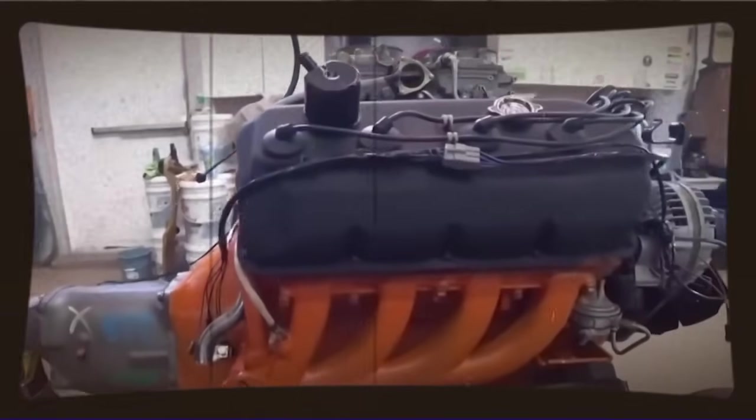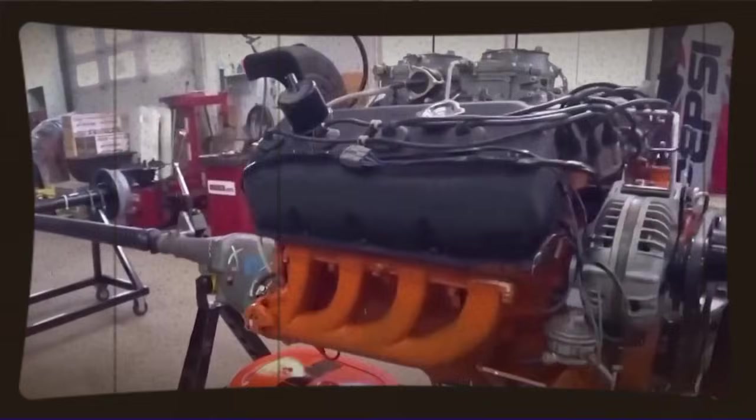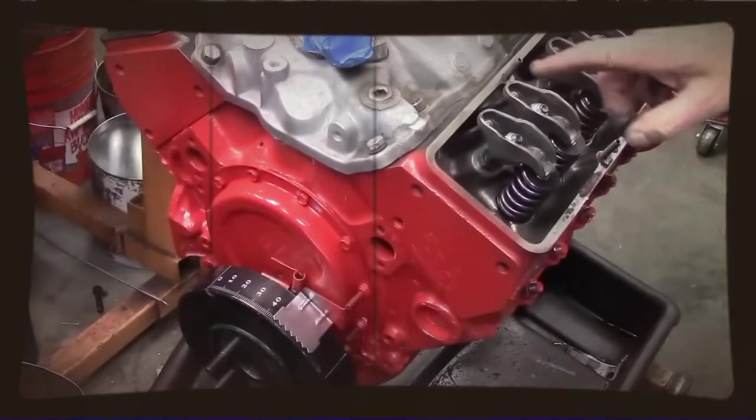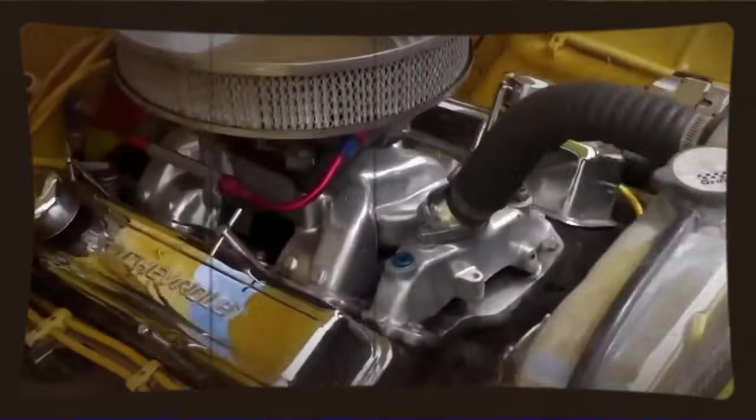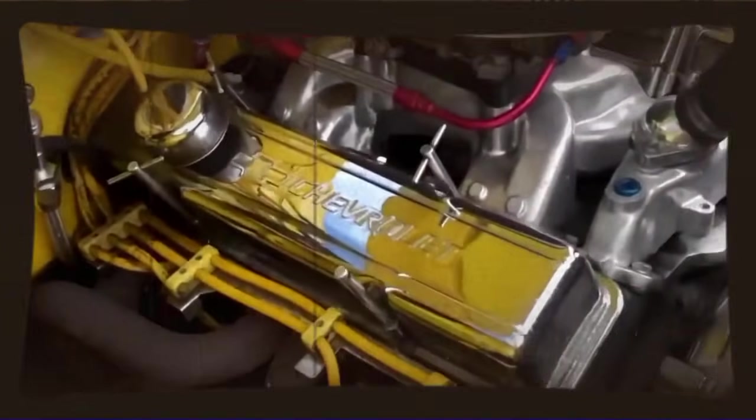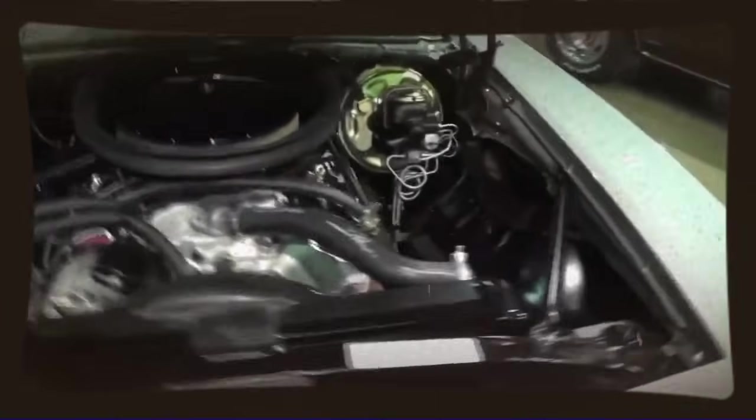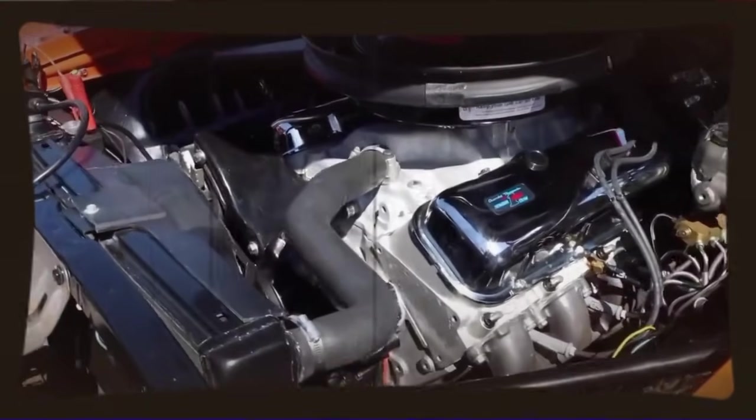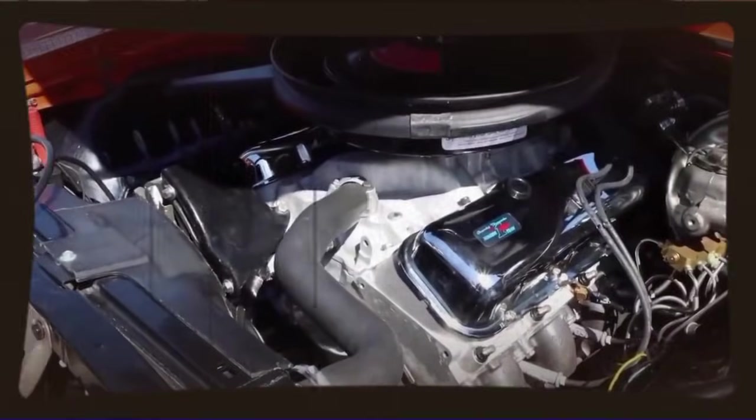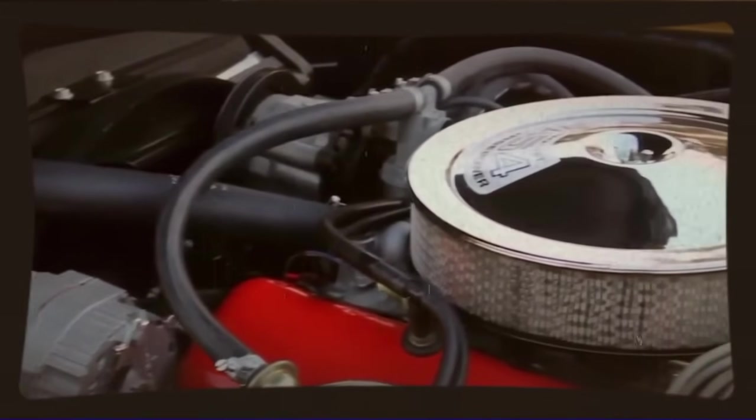But mass production requires that every engine, whether it's the first one off the line or the ten thousandth, works properly without individual adjustment. Two-stroke engines are particularly sensitive to manufacturing tolerances because the port timing is so critical. If the ports are even slightly off in their positioning, the engine won't scavenge properly and performance suffers dramatically. Ford's four-stroke design was more forgiving of minor manufacturing variations, which meant they could maintain quality even with the manufacturing technology available in the 1930s.